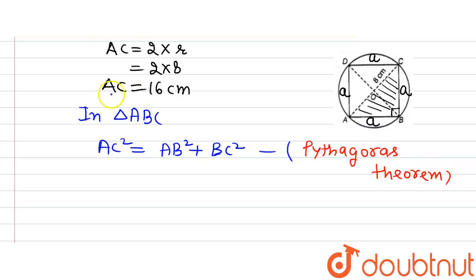Now putting in the values, AC is equal to 16, so we will have 16 raised to the power 2. AB and BC are equal and we have assumed them to be A, so A square plus A square. This will give us 2A square is equal to 16 raised to the power 2, which is 256.